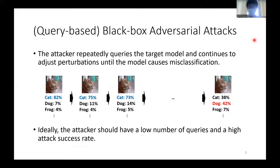Recently, there has been a lot of research on generating adversarial examples using only the output information from the model via queries. The attacker repeatedly queries the target model and continues to adjust perturbations until the model causes misclassification. Ideally, the attacker should have a low number of queries and a high attack success rate.